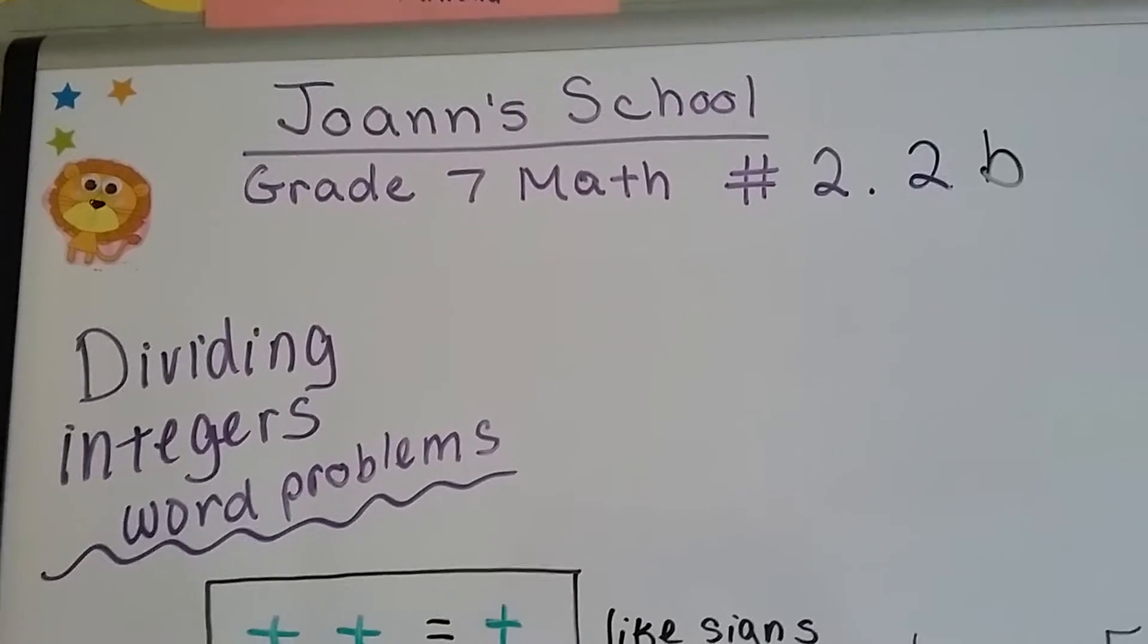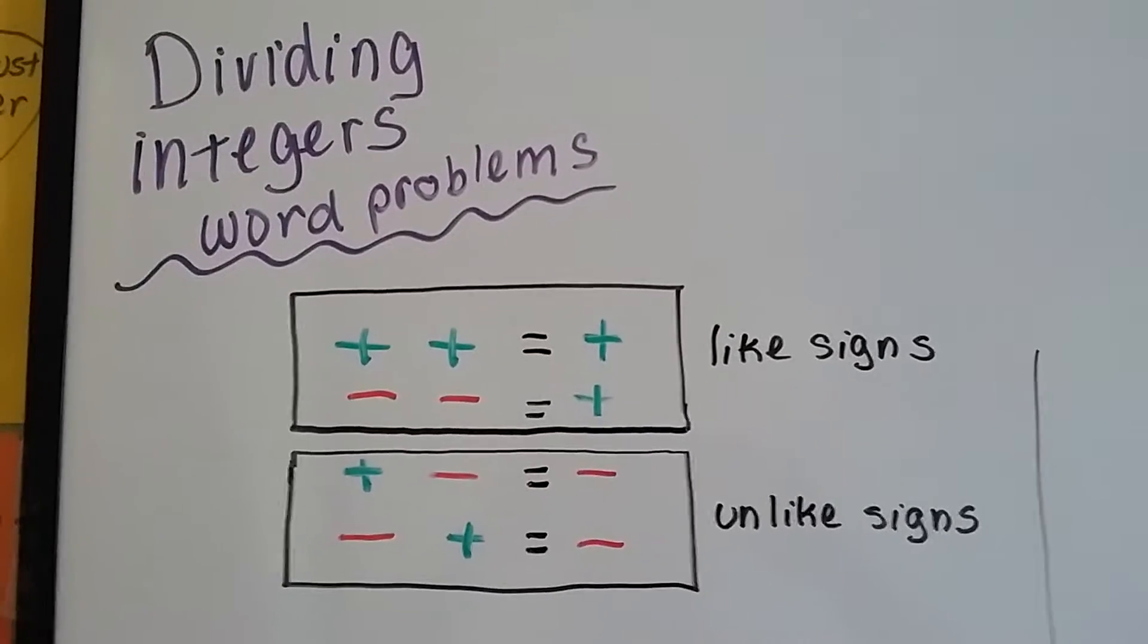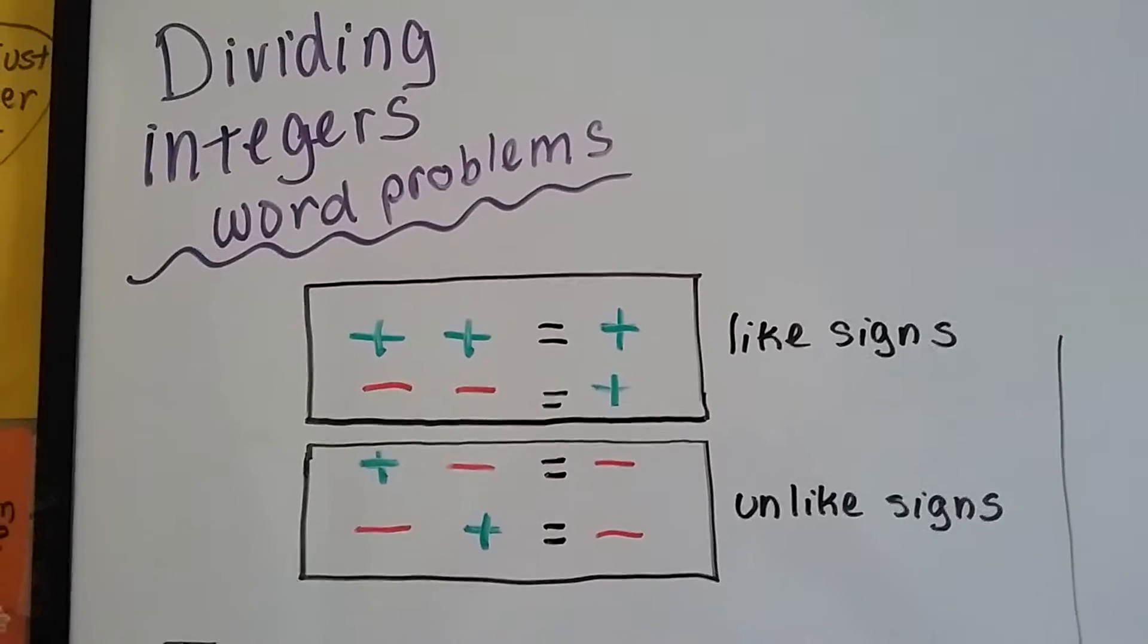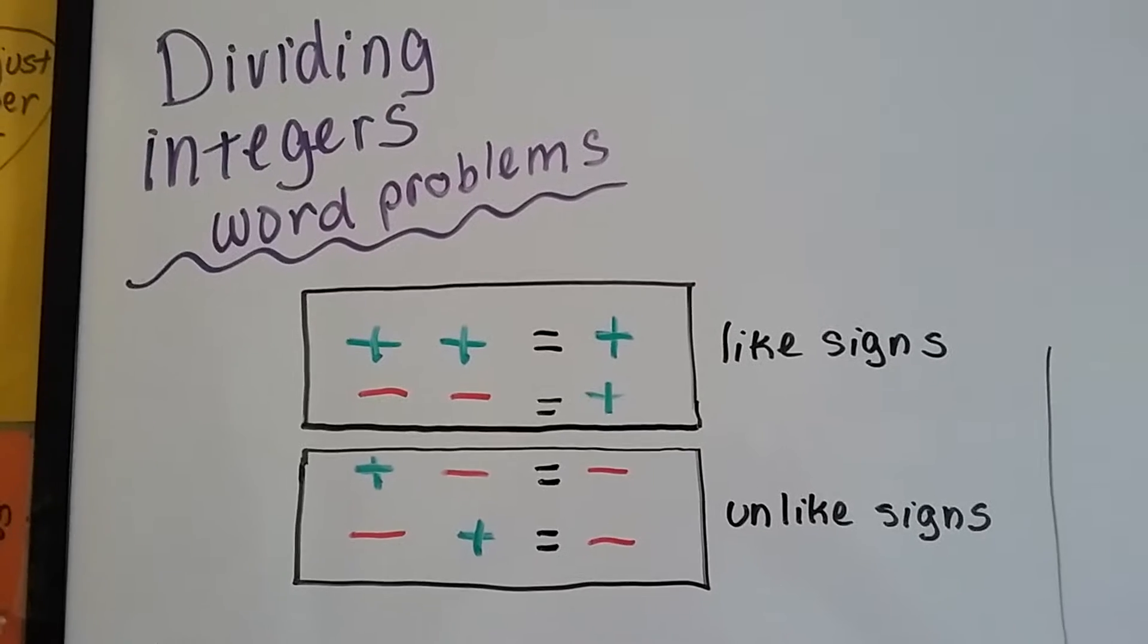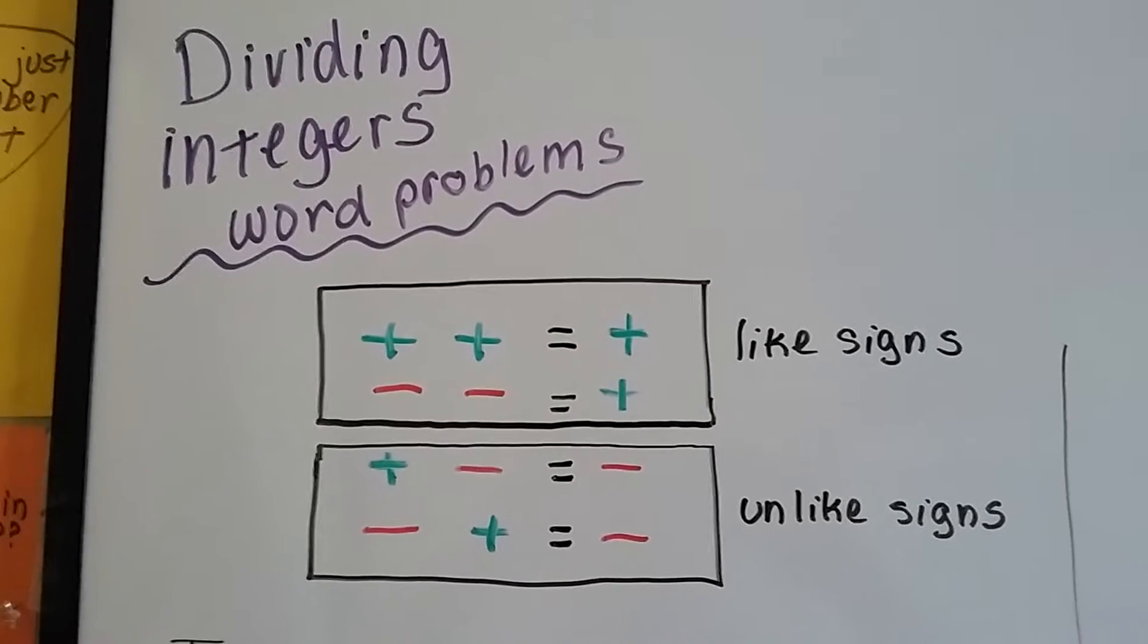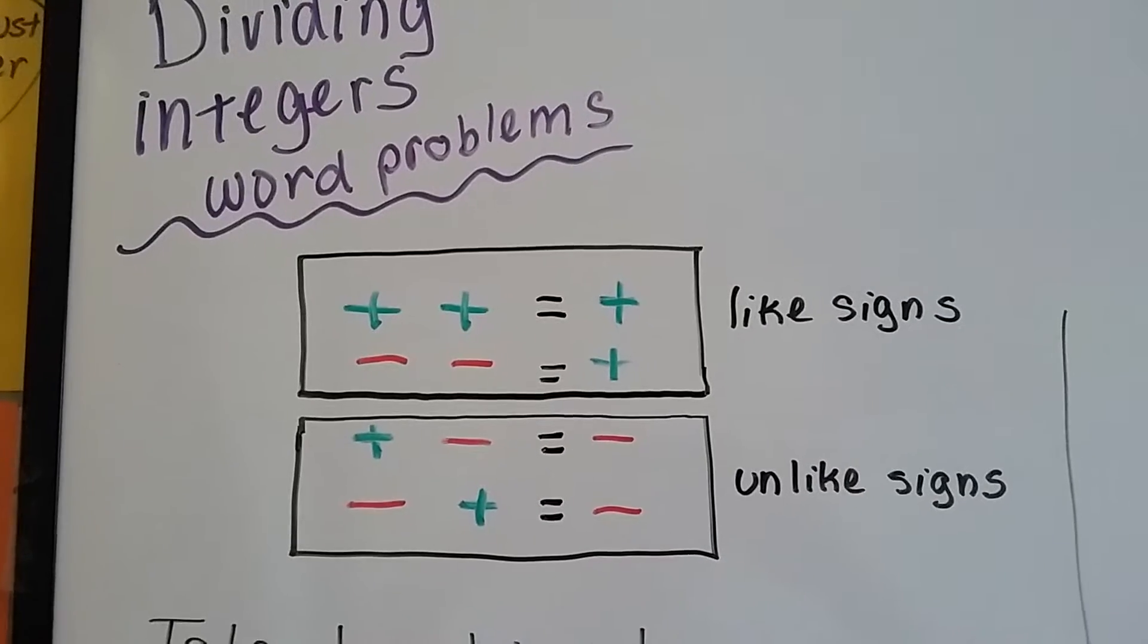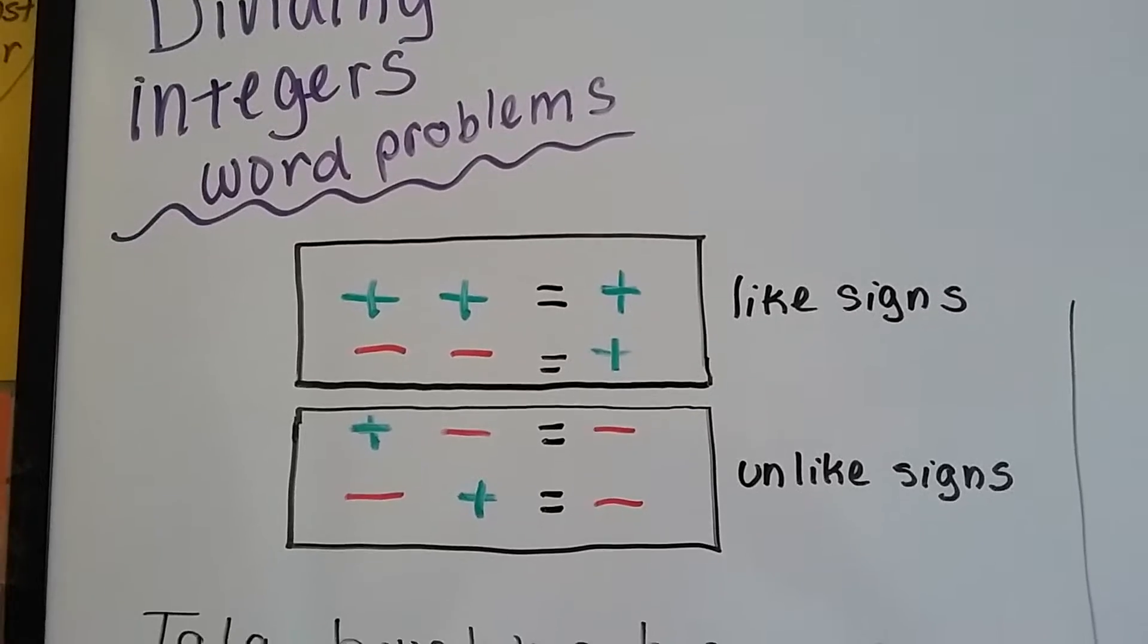Grade 7 math number 2.2b: dividing integers word problems. If you remember from the last video, we found out that the rules for dividing integers is the same as multiplying integers. If we have like signs, the quotient is going to be positive. And if we have unlike signs, the quotient is going to be negative.